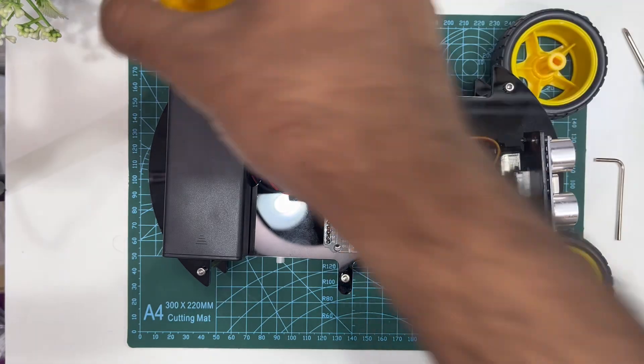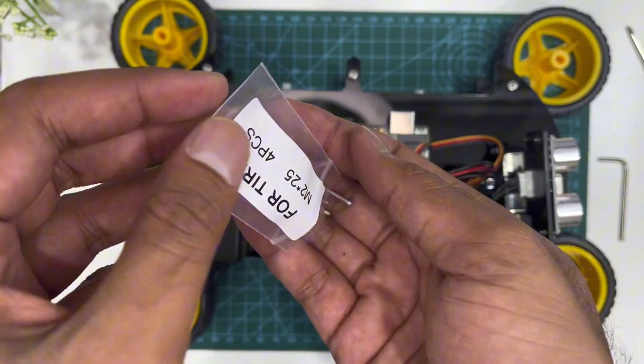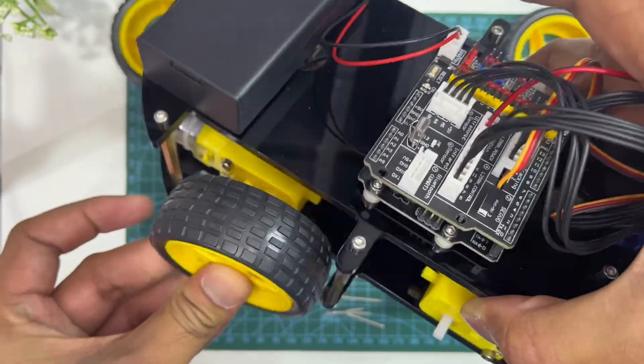Almost done! Let's attach four tires using M3 by 25 cross screws.